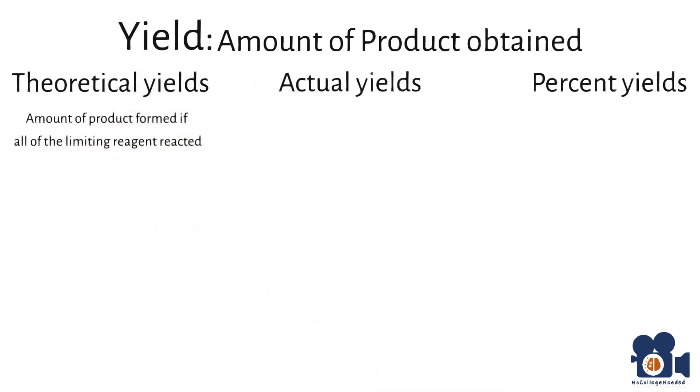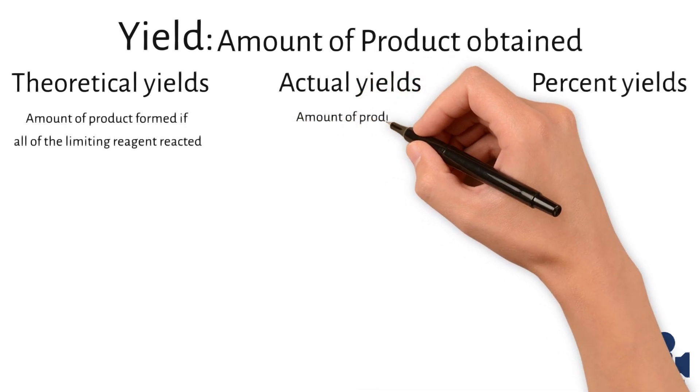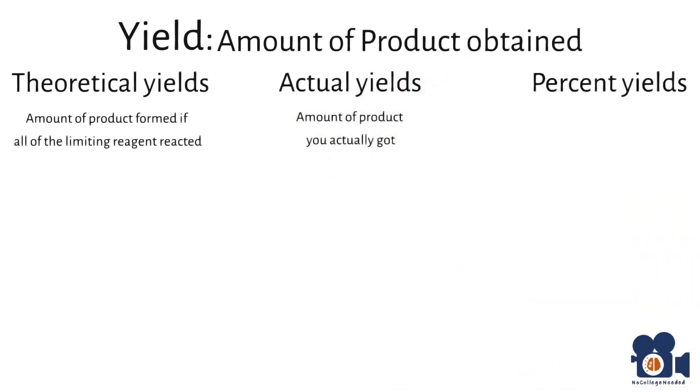The theoretical yield is the amount of product formed if the reaction was perfect and all of the limiting reagent reacted. The actual yield is the amount of product you actually got, and the percent yield is the ratio of the actual yield over the theoretical yield as such: actual divided by theoretical times 100% equals percent yield.